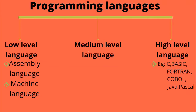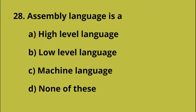Programming languages are: low level language, medium level language, and high level language. Low level language includes assembly language and machine language. High level language is another category. The answer is Option B — low level language.